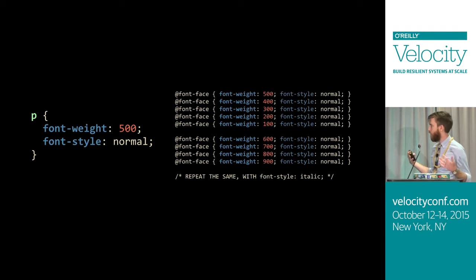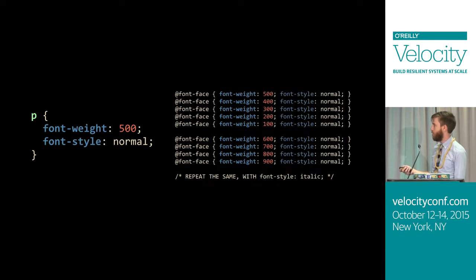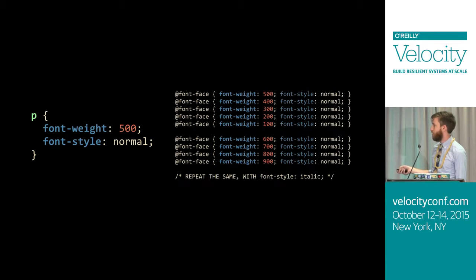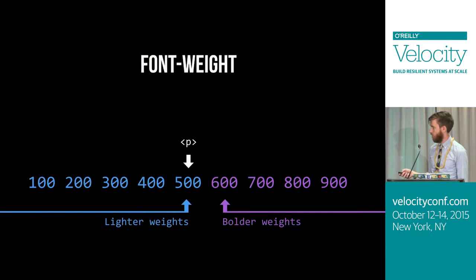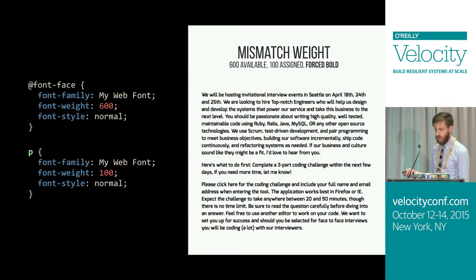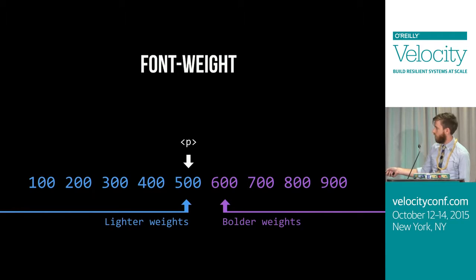If a font-face exists on the page with a matching font-family, it's going to use something. And if it doesn't find anything matching the same font-weight and font-style, it will repeat the entire list with font-style italic. So the paragraph walks through: 500, 400, 300, 200, 100, 600, 700, 800, 900.